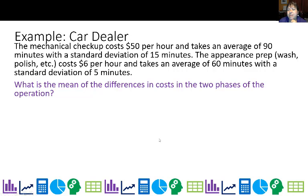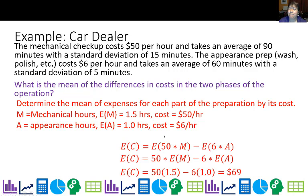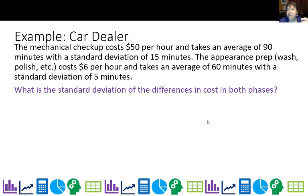What is the mean of the differences in cost in the two phases? Expected value for mechanical is 1.5 hours at $50, and for appearance is 1 hour at $6. For the expected difference in cost, I find the expected values for cost and subtract: E(M cost) - E(A cost) = 50(1.5) - 6(1) = 75 - 6 = 69. Expected values are always easy.